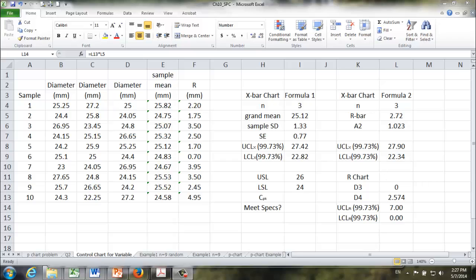Let's go back to our Excel spreadsheet. We did the X-bar and R chart earlier. And right now we know that the upper specification limit is 26, lower specification limit is 24.